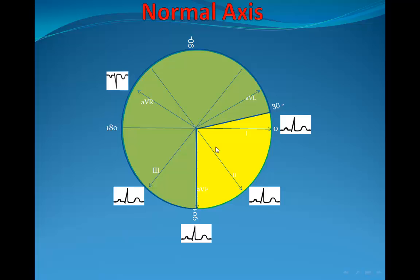Why does AVR show negative deflections? Because it is almost against the normal axis of the heart. If the electrical activity is directed toward the same direction as a lead, it shows a positive deflection; if it goes against the recording lead, it shows a negative deflection. In AVR, being almost against the heart's electrical axis, it shows negative deflections in the P wave, QRS complex, and T wave — almost the opposite of lead II, which is near the mean electrical axis.